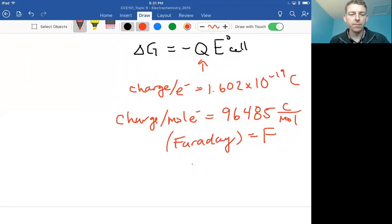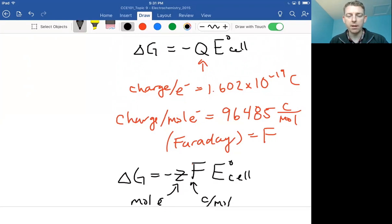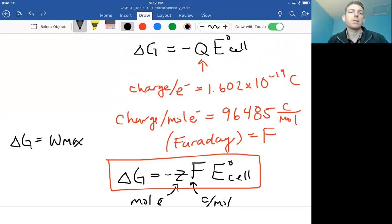Then replace the Q and say delta G is going to equal negative z, being the number of moles of electrons, multiplied by Faraday's constant, which gives us charge per mole of electrons. So if this is mole of electrons and this is going to be charge per mole, now we can multiply that by our standard cell potential and we're done. Okay, so that gives us an equation that's going to connect delta G and the work.